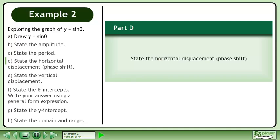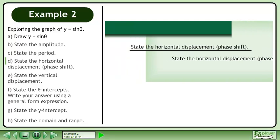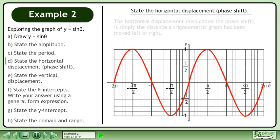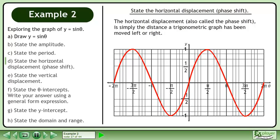In part d, state the horizontal displacement. The horizontal displacement, also called the phase shift, is simply the distance a trigonometric graph has been moved left or right. The sine graph is currently in its original position, so there is no phase shift.